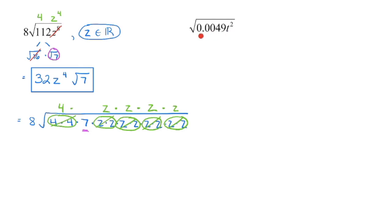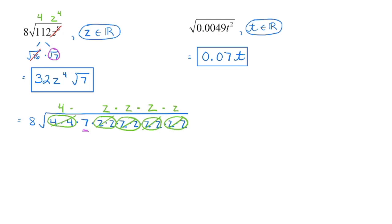Looking at this last example, this is a square root and we are multiplying. The variable has an even exponent, so t just has to be an element of the real number system. Even though this is a decimal, I recognize that 49 is a perfect square. Grab your calculator — the square root of 0.0049 is a terminating decimal. So when we square root this, we get a perfect square, and t squared is also a perfect square. The result is just 0.07t, with no radicand left.